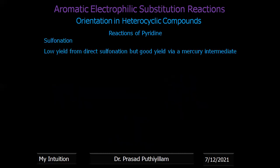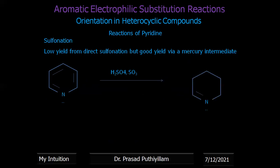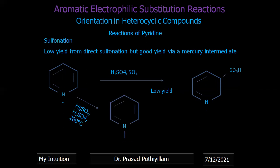Sulfonation gives low yield from direct sulfonation, but good yield via a mercury intermediate. Sulfuric acid and SO3 give really low yield directly. But if mercuration of the heteroatom is done with mercury sulfate and sulfuric acid at 200°C — forming HgSO3⁻ with nitrogen having positive charge — that intermediate can be isolated and further converted into pyridinium-3-sulfonic acid, giving comparatively better yield: approximately 70%.